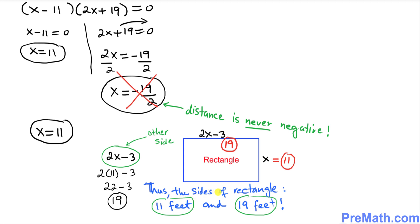Thus the length of the sides of this given rectangle are 11 feet and 19 feet. And that is our answer.